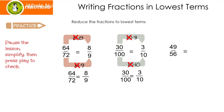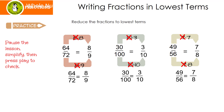Let's look at the last one. When I think of 49, I think of 7 times 7. Does 7 go into 56? It sure does — 7 times 8. I'm going to cancel my common factor and I end up with 7 over 8. 7 over 8 does not have a common factor, so 49 over 56 is equal to 7 eighths.